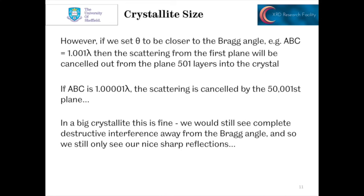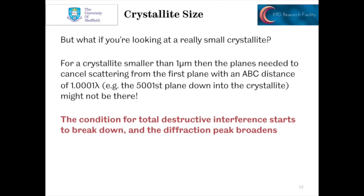Now in a big crystallite, that's fine. We'd still see complete destructive interference away from the Bragg angle. And so we still only see our nice sharp reflections where we are meeting the Bragg condition when that distance ABC is equal to 1 wavelength.